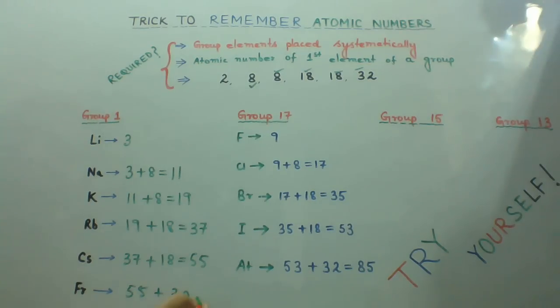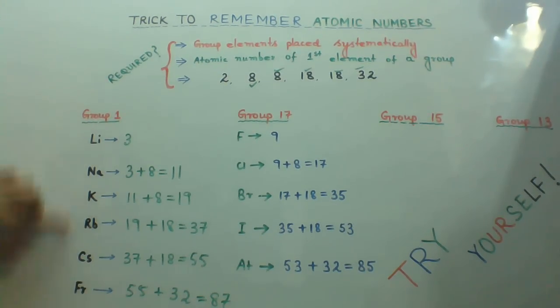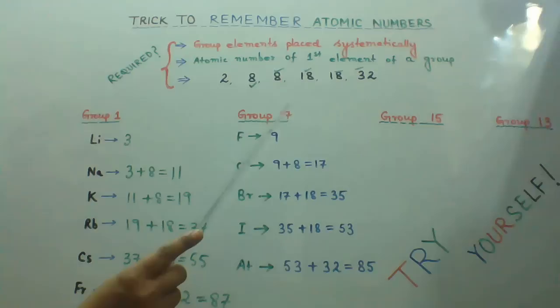This will give you 87. See, very simply you will know the atomic numbers of all the elements: cesium is 55, francium is 87. Now let's move on to Group 17.